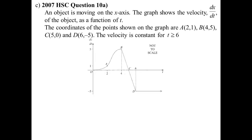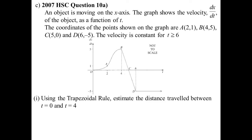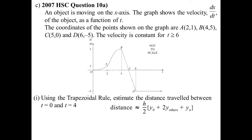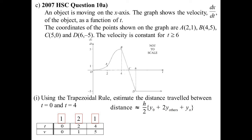Here is a velocity-time graph with some curves. Points are given, and past 6 seconds the velocity is constant. Using the trapezoidal rule to estimate distance travelled between 0 and 4: the table of values gives t = 0, v = 0; t = 2, v = 1; t = 4, v = 5. Applying h/2 times [y₀ + 2(y_middle) + yₙ] gives an estimate of 7 metres.